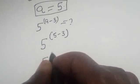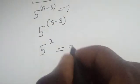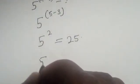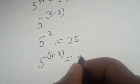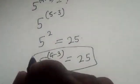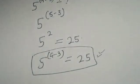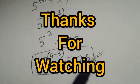This gives us 5 raised to power 2, which is 5 squared, and 5 squared is equal to 25. Therefore, 5 raised to power a minus 3 is equal to 25. That is our final answer. If you enjoyed the class, please don't forget to like, share, comment, and subscribe. Thank you.